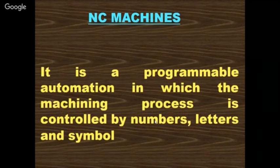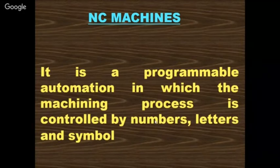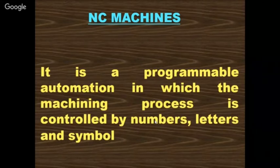Numerical control is a programmable automation in which the machining process is controlled by numericals — numbers (0 to 9), letters (A to Z), and symbols (dollar symbol, percentage symbol, at-the-rate symbol, and various other symbols).